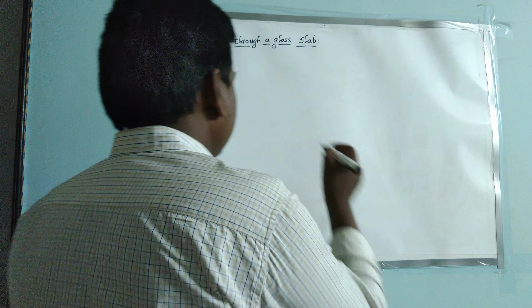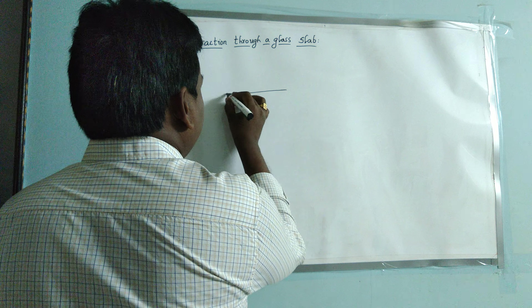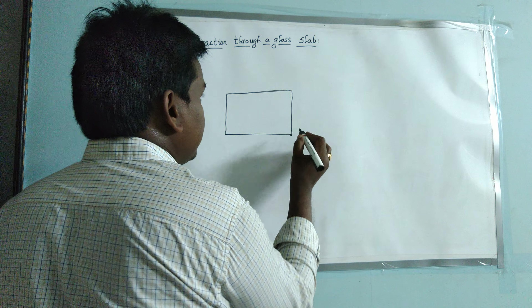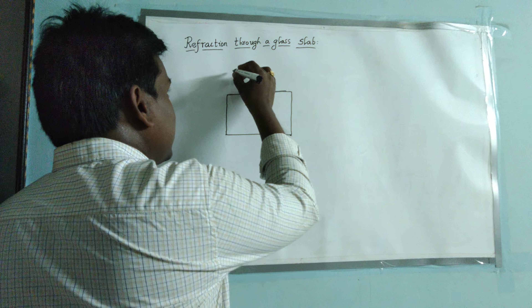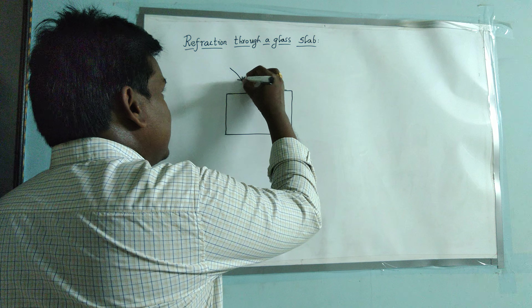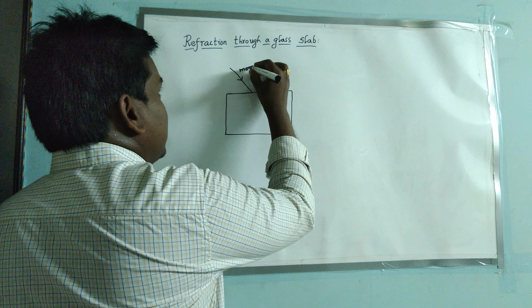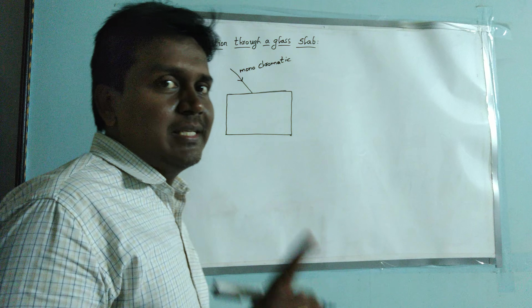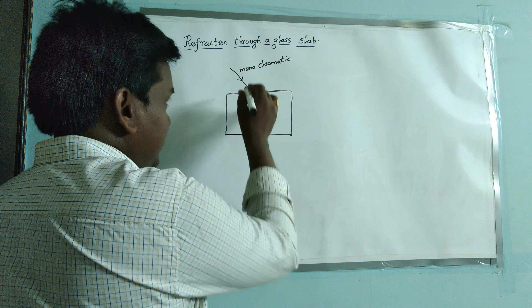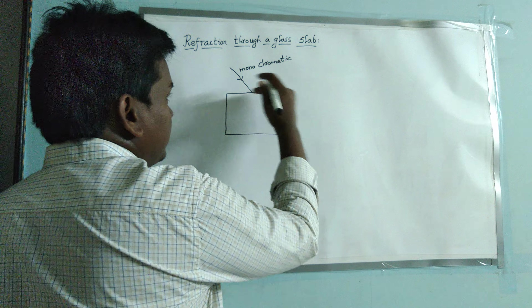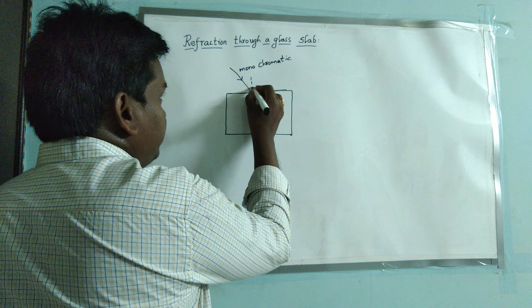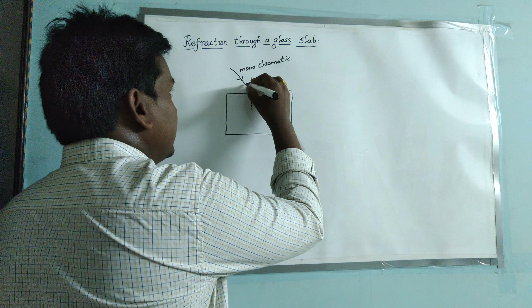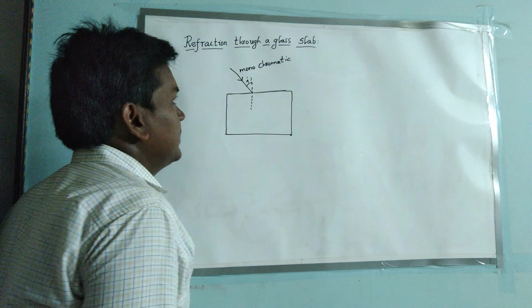Now I am considering a glass slab here. This is a glass slab, and it has some thickness. I am now directing a ray on the glass slab, and this light ray is monochromatic light. Monochromatic means it is having only a single color. The monochromatic light is incident at one surface of the glass slab. This is the normal to the surface, and this is the incident ray, so the angle of incidence is formed here.